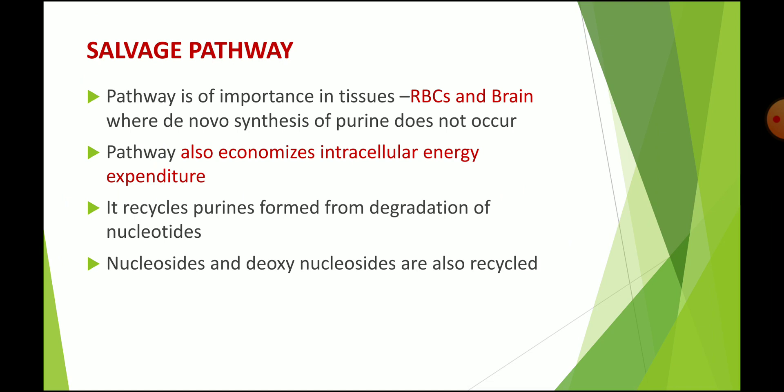This is usually seen in humans — RBCs, brain, and to some extent polymorphonuclear leukocytes also, mainly in the RBCs and brain. So this pathway is of importance mainly in the RBCs and brain, where de novo synthesis of purines does not occur.